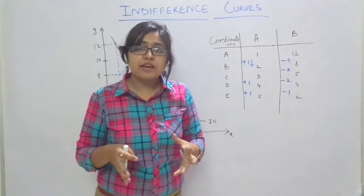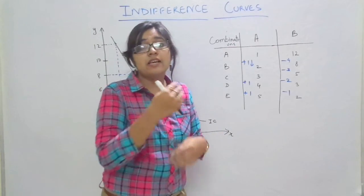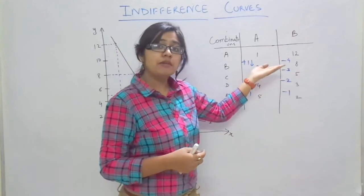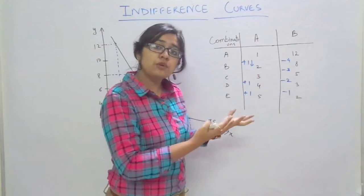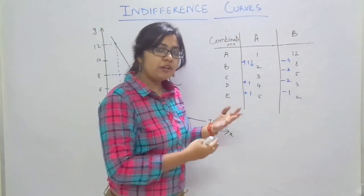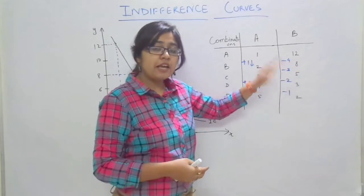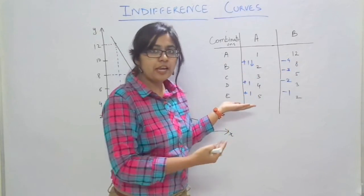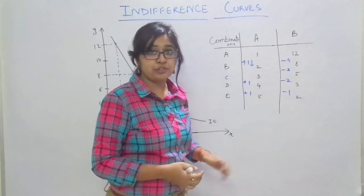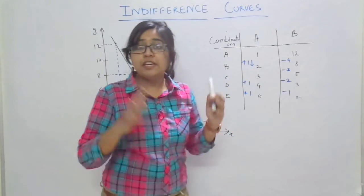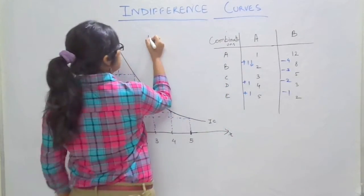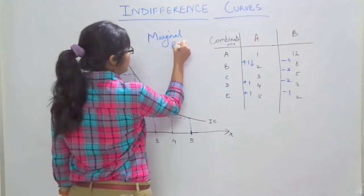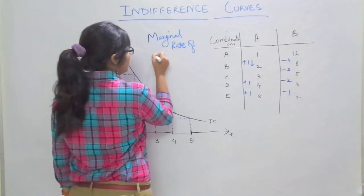This sacrifice can also be termed as substitution — because for every sacrifice we make of good B, we are substituting good A to it. Every sacrifice of B is substituted by the additional unit of good A. And this is what we call the marginal rate of substitution.